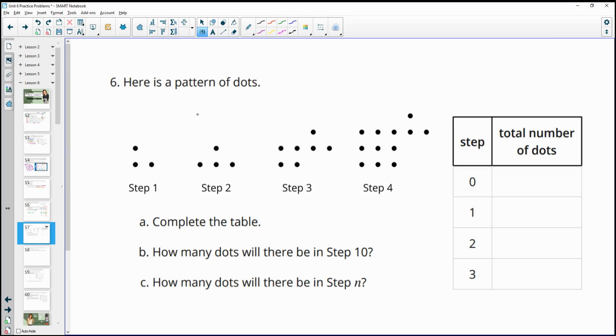Number six, here is a pattern of dots. And actually on this one, there's an error. So if you look at this, it says step 0, 1, 2, 3, where in the diagram it says step 1, 2, 3, 4. So they made a mistake in the book. This should be step 0, 1, 2, and 3. So you can fix that in your book. So then they want us to complete the table. So how many dots are in each stage? So we've got 3 in step 0. We've got 4 in step 1. We have 7 in step 2. And we have, let's see, 9, 10, 11, 12 in step 3.